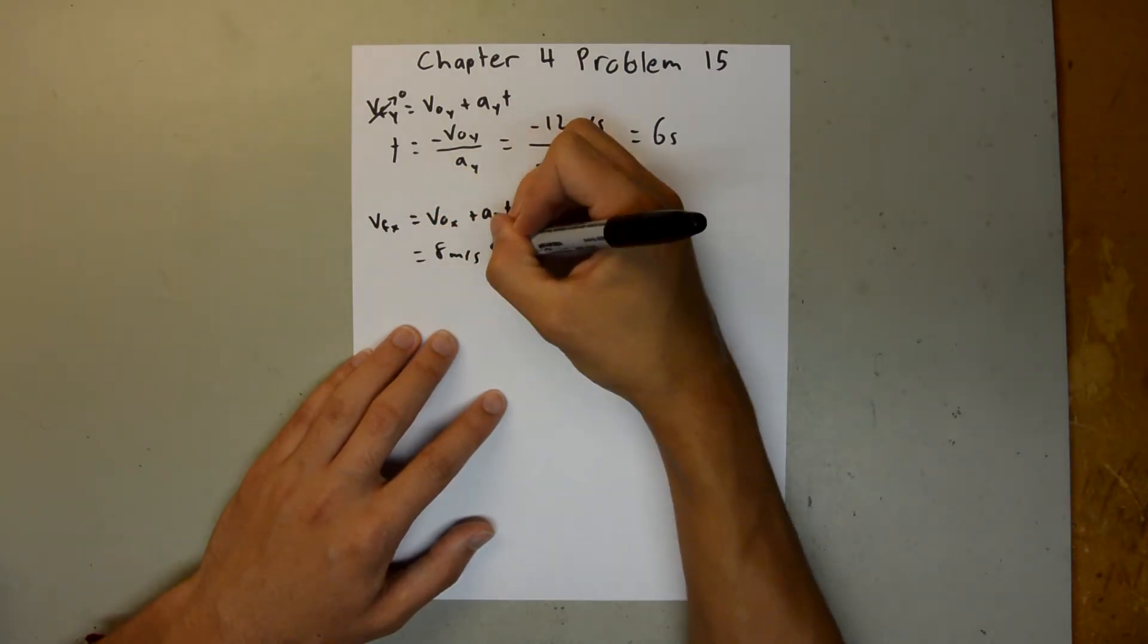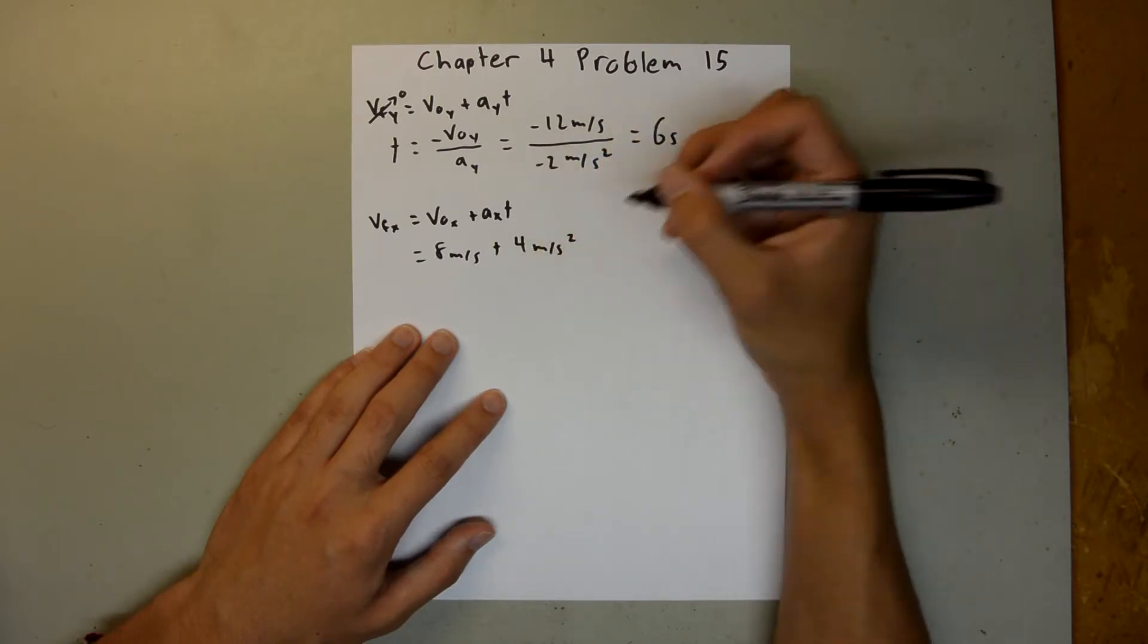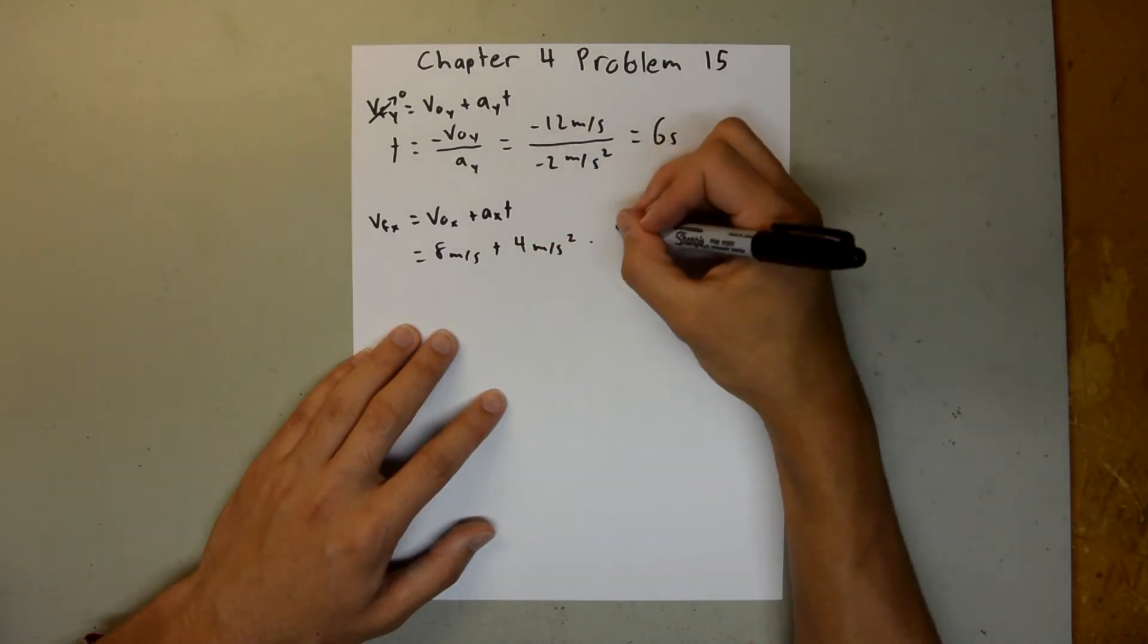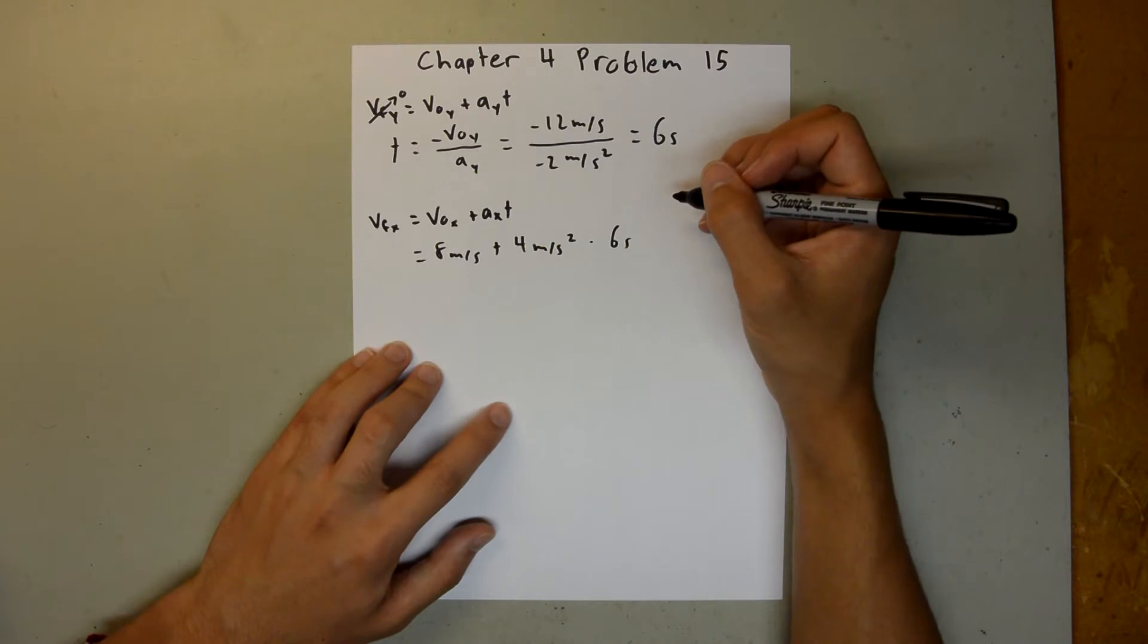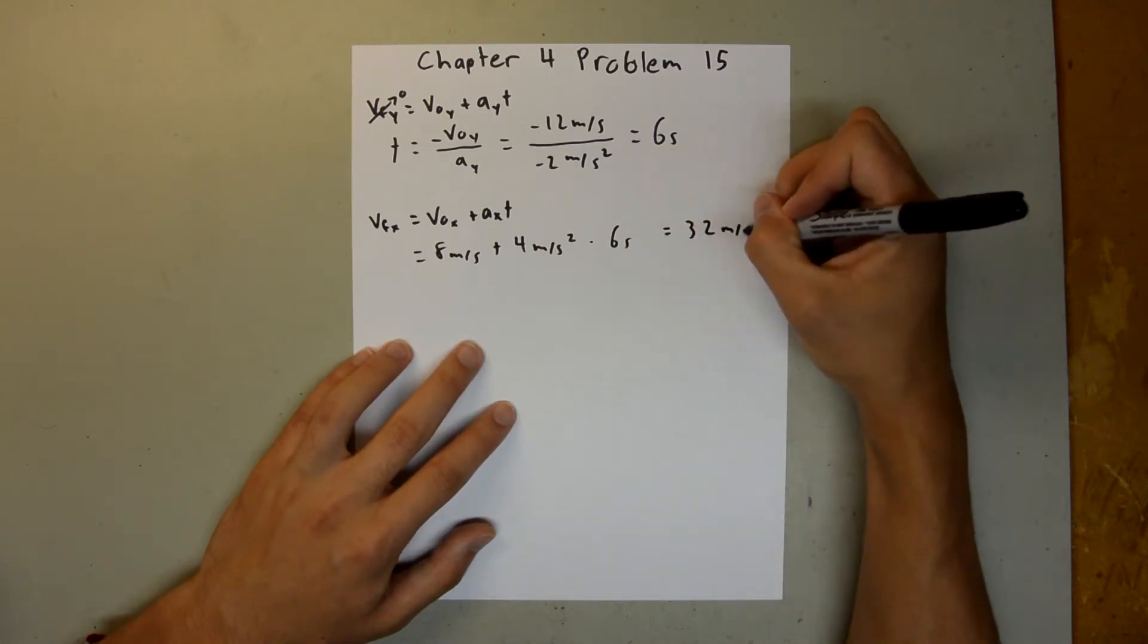8 meters per second plus 4 meters per second squared times our time, which we just found up here, 6 seconds. And when you plug that into your calculator, this is equal to 32 meters per second.